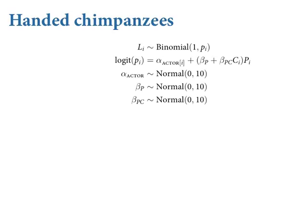Instead of having some category assigned the intercept with all remaining categories getting dummy variables, we're going to have a vector of intercepts where each category gets its own. The notation uses a bracket on the parameter: alpha sub i means alpha for the actor value for case i. There's a column in your data set called actor with integers, and those integers are the indices of a vector of parameters.